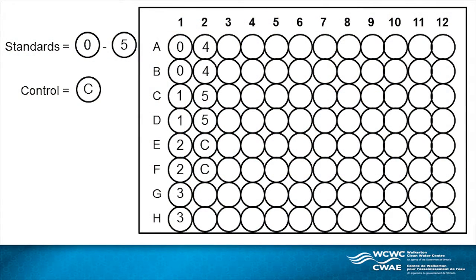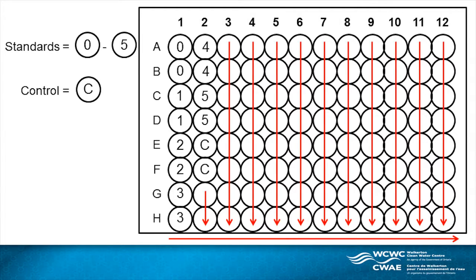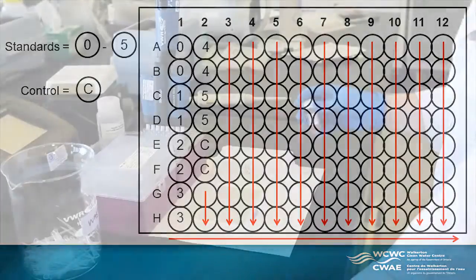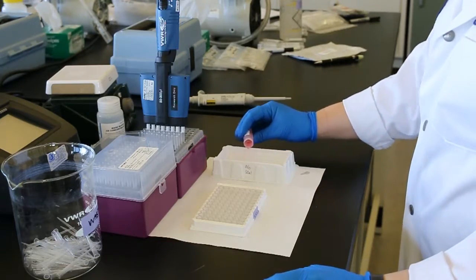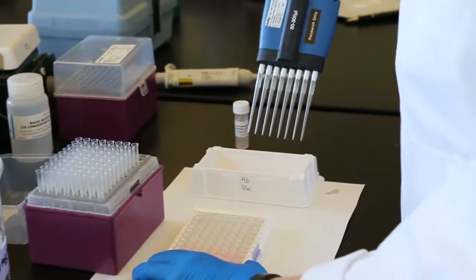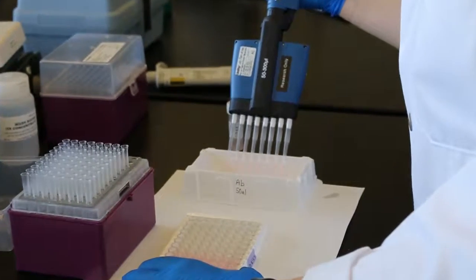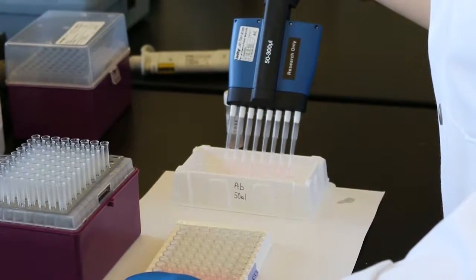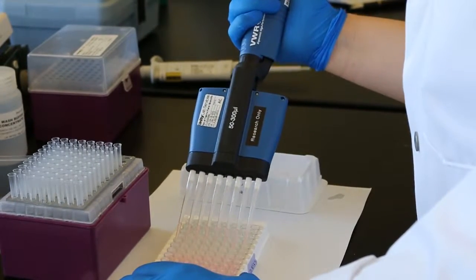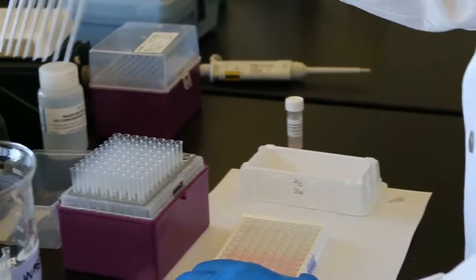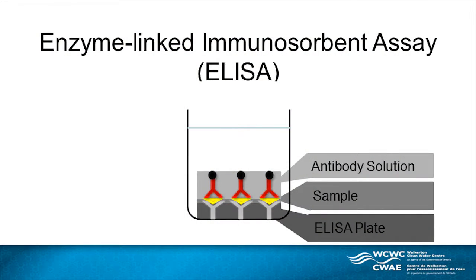A plate map should be used to record the position and contents of each well to avoid cross-contamination. The antibody is inverted and poured into a clean tray. 50 microliters of the antibody solution is added to all of the wells using a multi-channel pipette. Pipette tips must be changed if they come into contact with the well contents. Upon addition of the antibody, the wells will be tinted pink.